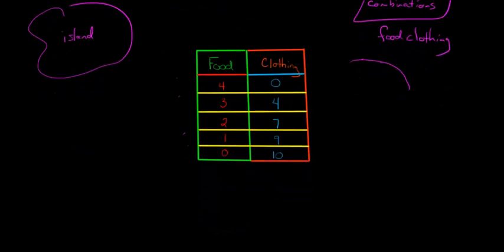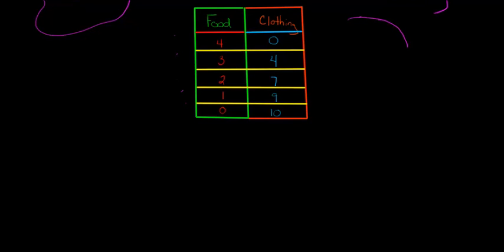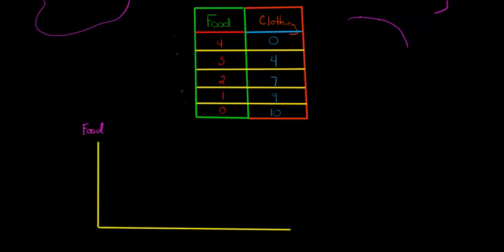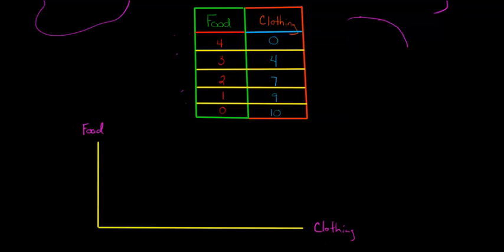So let's graph this out. I'm just going to draw a simple graph here. I'm going to put food on the y-axis, and then we're going to put clothing on the x-axis. I'm making the x-axis a lot longer because we're going to go from zero to ten in clothing. So this is our number of units of clothing and number of units of food. Our food could go from zero up to four units, so we'll mark one, two, three, four on the y-axis.